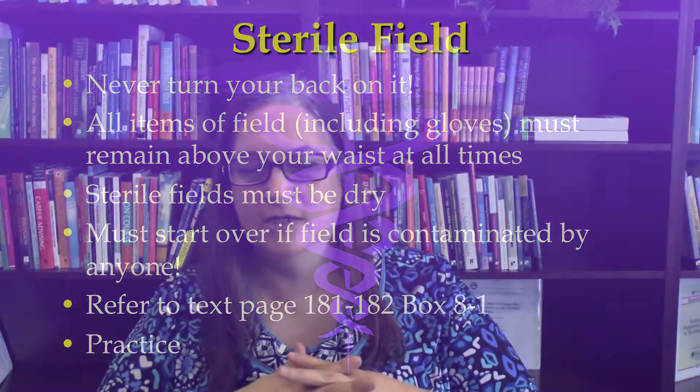On pages 181 to 182, box 8-1, is where this is all outlined for you — that's in your Perry, Potter, and Ostendorf book. Practice. You need to practice setting up a sterile field and putting on sterile gloves. It does not flow naturally until it becomes habitual, so get those principles firmly ingrained so that you can also pick it out when somebody else messes up.